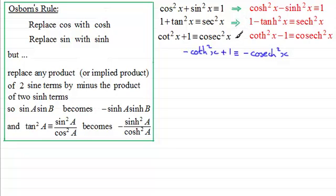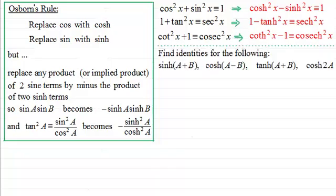So each of these trigonometric identities implies the following hyperbolic identities. Now I've got a few more examples for you to try. What I want you to do is find the hyperbolic identities for: sinh of a plus b, cosh of a minus b, tanh of a plus b, and cosh of 2a. If you'd like to have a go at these, just pause the video. When you come back, we'll run through them and you can check your methods with mine.